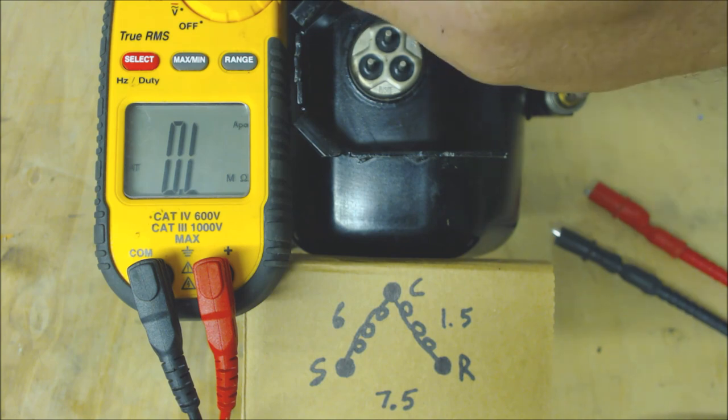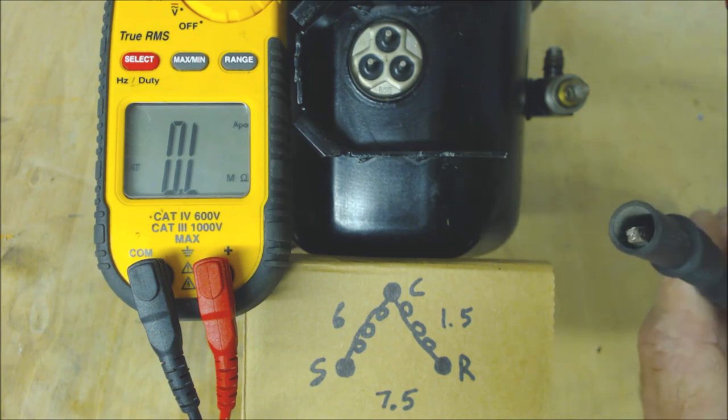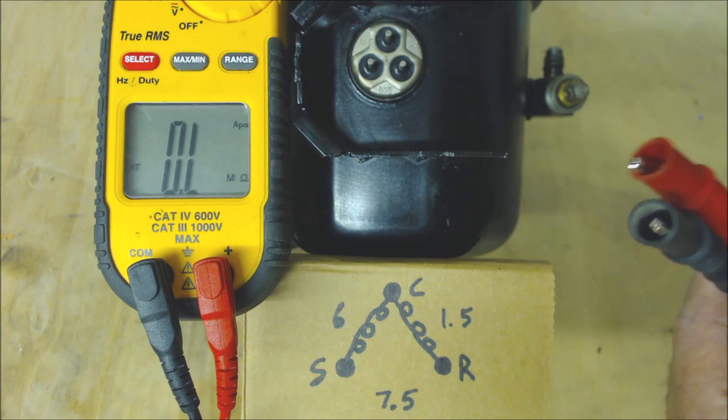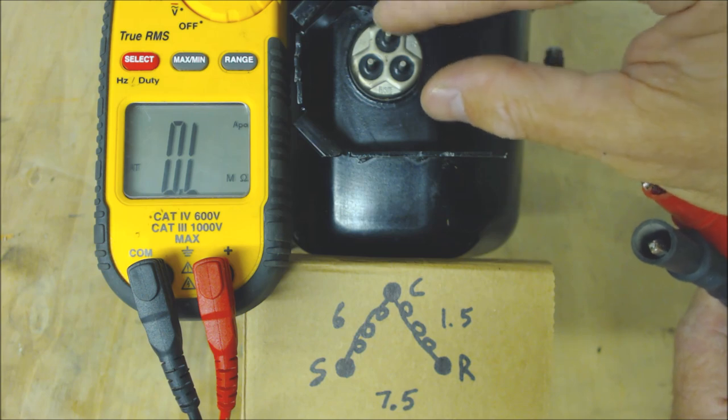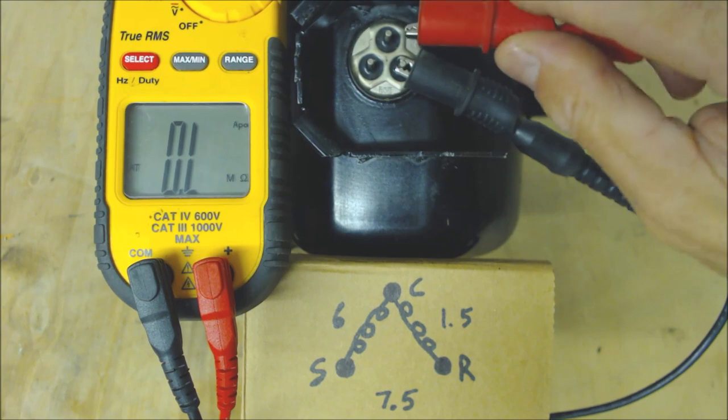Our multimeter is set on ohms and we're reading OL because our probes are not touching. What we're going to do is test each of these terminals right here in order to read our resistance values. Our power is off, our compressor plug is off, and now we're going to check our resistance values.